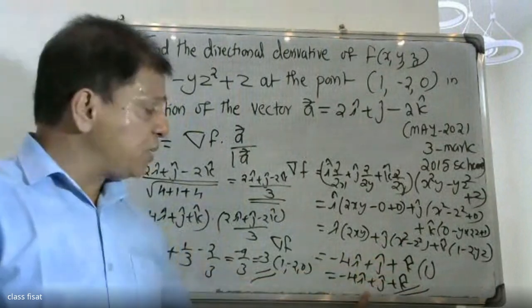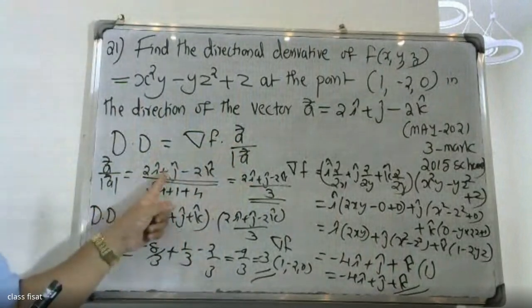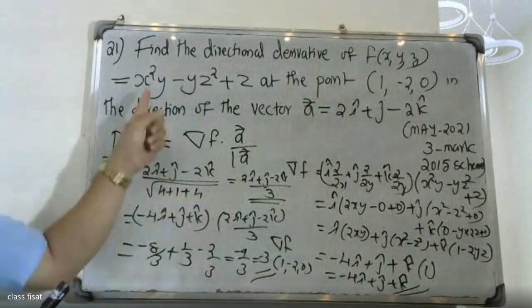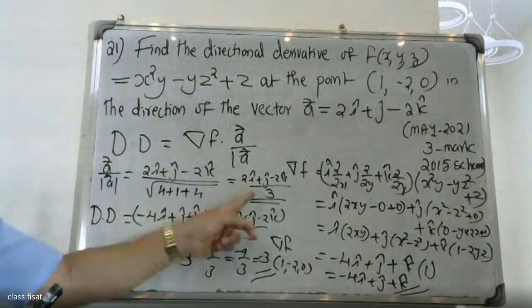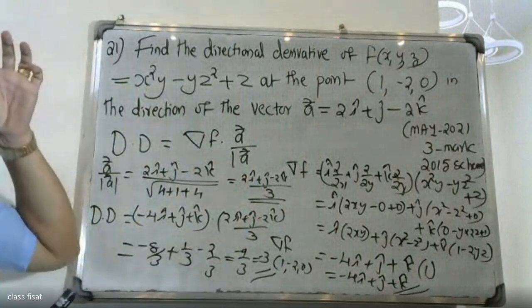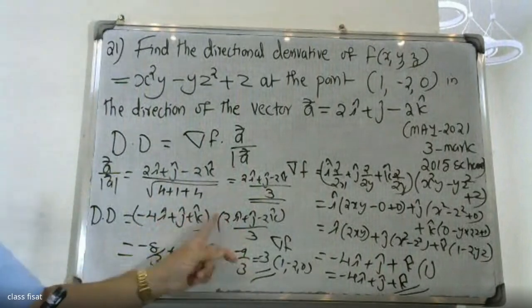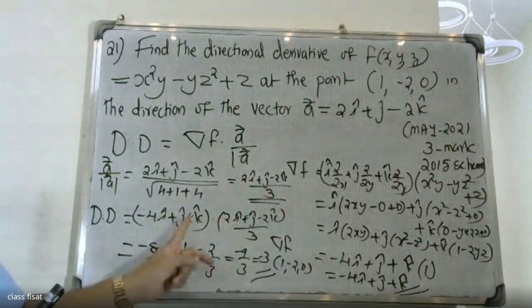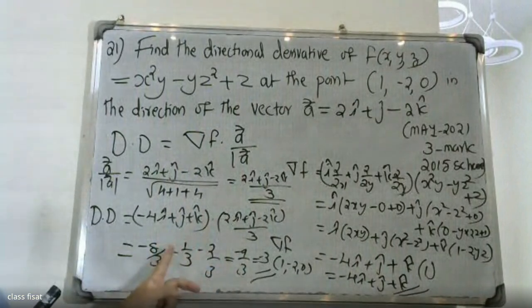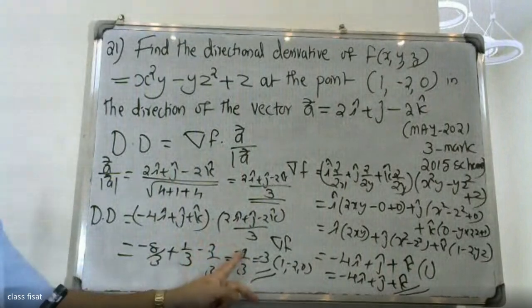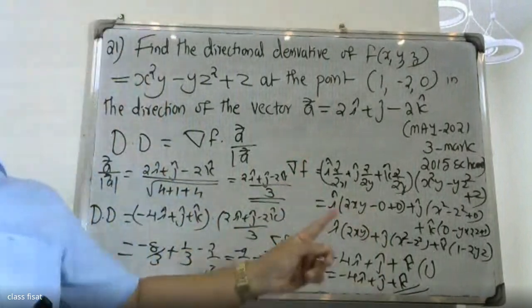The vector a divided by modulus of a is (2i + j - 2k) divided by root 9 = 3. Then (-4i + j + k) dot (2i + j - 2k)/3 equals -8/3 + 1/3 - 2/3 = -9/3 = -3. The final answer is -3.